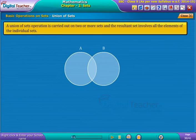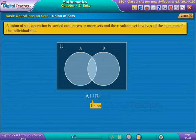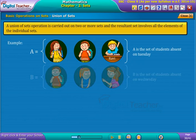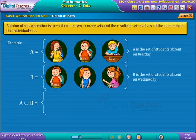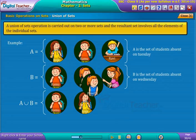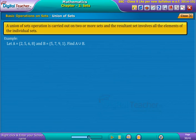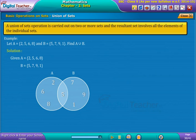A union of sets operation is carried out on two or more sets, and the resultant set involves all the elements of the individual sets. Let A and B be the two sets. The symbol that denotes union of sets is shown on the screen. Each element should be taken once. Therefore, A union B is written as shown.